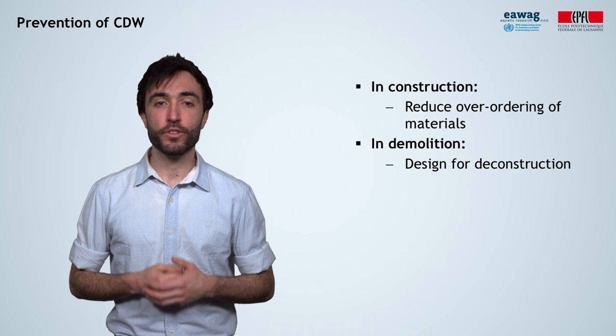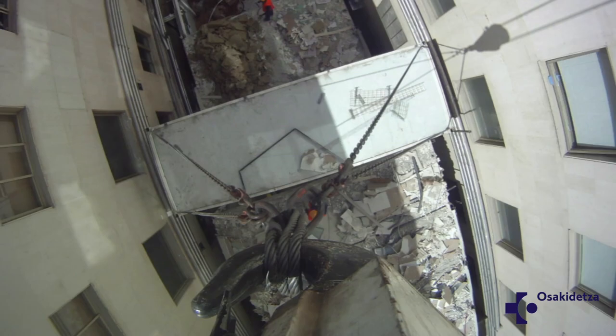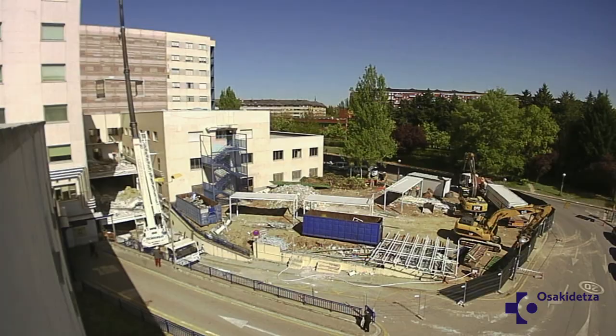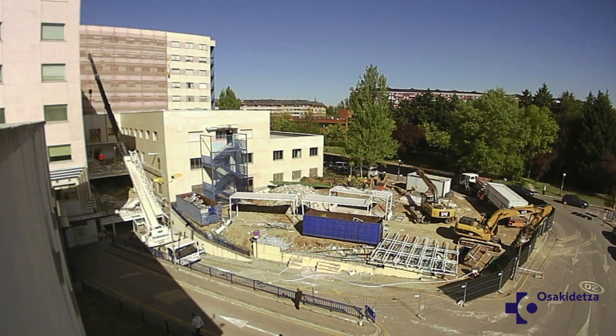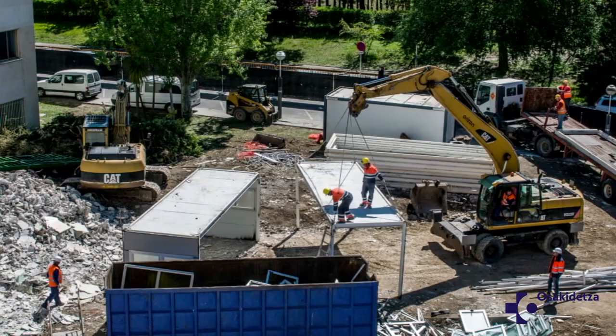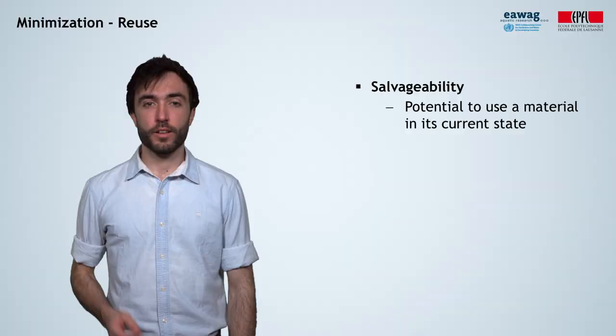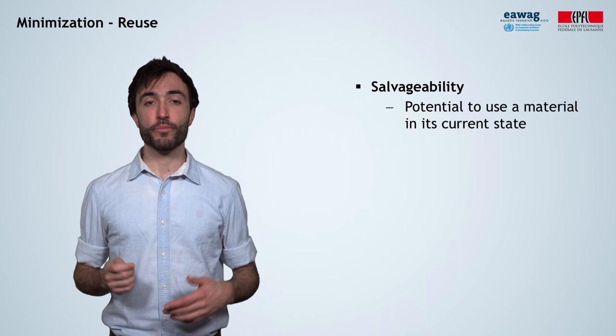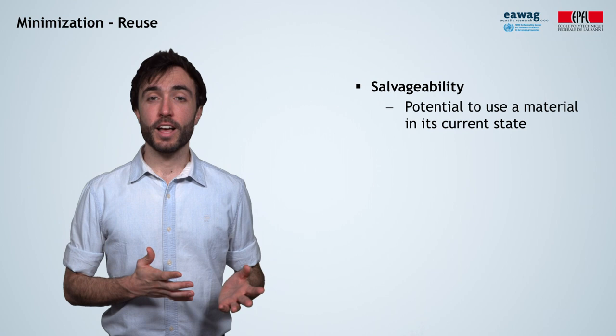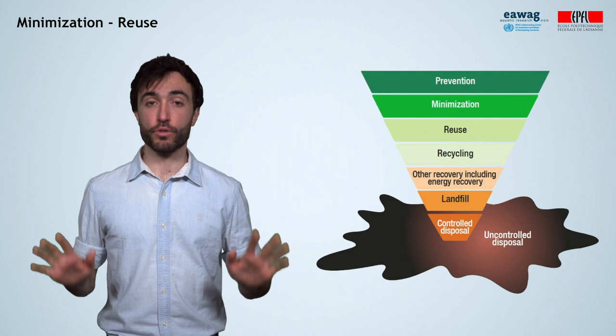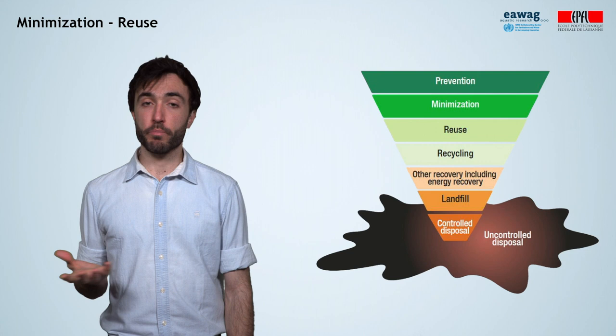For instance, here we see the deconstruction of a modular building, where the different modules can be dismantled and their parts stored for further use. When talking about reuse of construction and demolition waste, we use the term salvageability. The salvageability of a material is defined as its potential to be reused in its current state, minimizing the needs for transport and further processing. Some debris might be used for backfilling of holes, for instance.